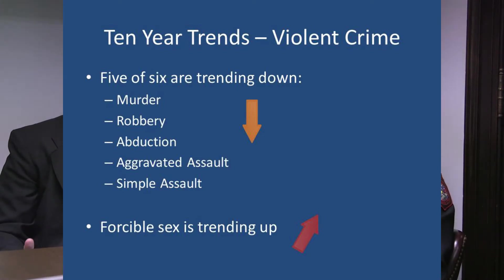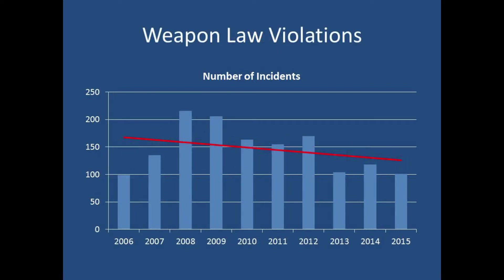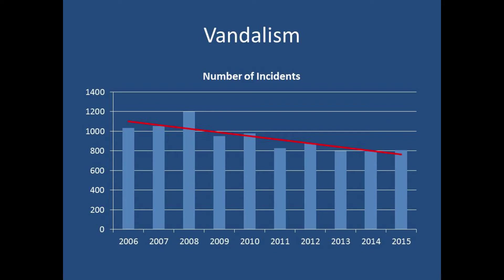Looking at maps of aggravated assault, murder, and robberies, 2008 sticks out with significantly higher crime than other years. As you mentioned to Council, economics really does factor into the crime rate. When you look at the graphs, there was clearly a spike in crime across a number of categories in 2008, and the only thing we can attribute that to is the general overall economic conditions at that time.